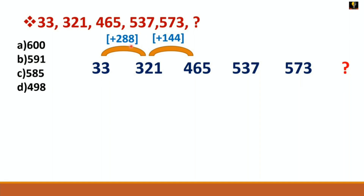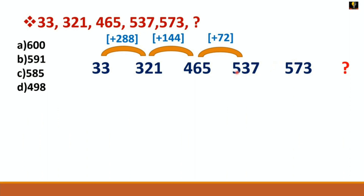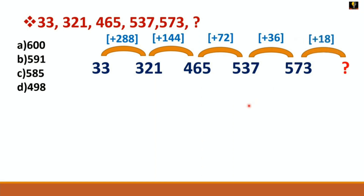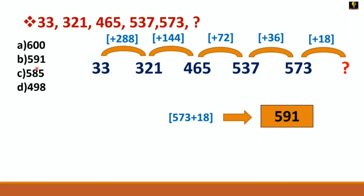The differences are being divided by 2 each time. So 465 + 72 = 537, and 537 + 36 = 573, because 72 divided by 2 = 36. Now the final answer is 573 + 18, because 36 divided by 2 = 18. So 573 + 18 = 591, which is option B.